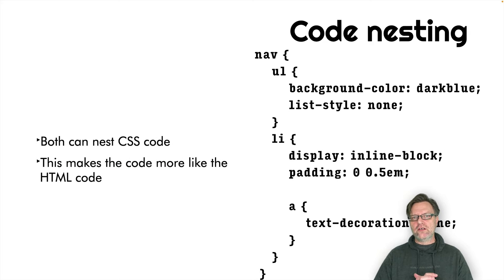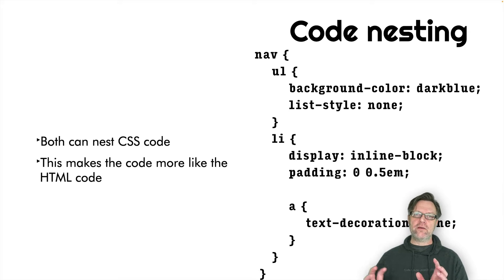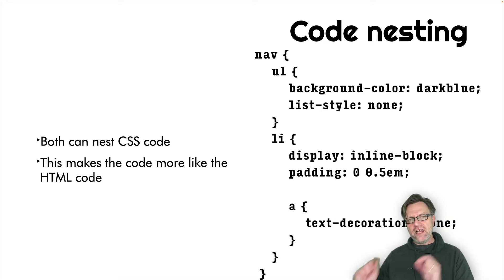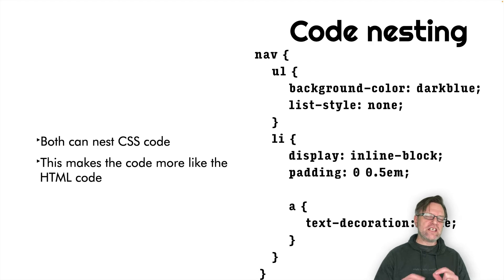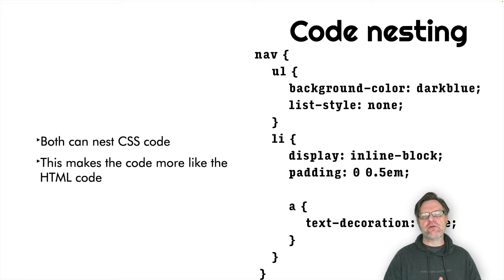In HTML, you probably know that you put an element within an element, and then within that element you put another element, and so on and so forth — so you get a tree structure. In CSS we usually don't do that, but in LESS and SASS we can do that. You can write code that is more in coherence with the HTML file.